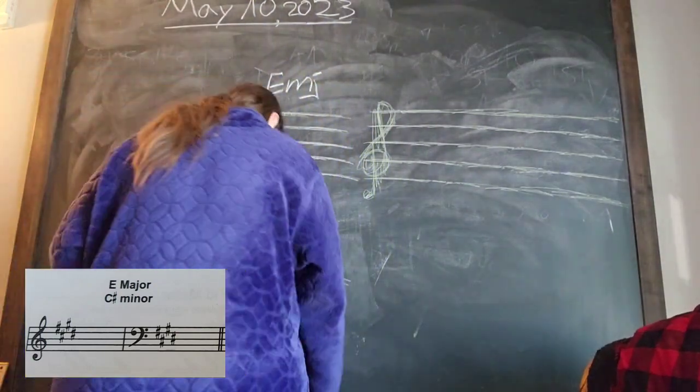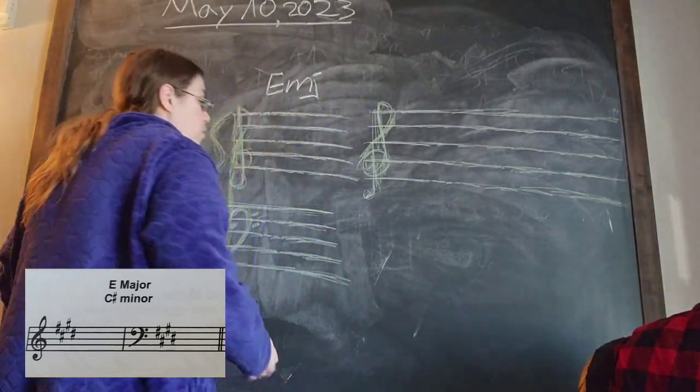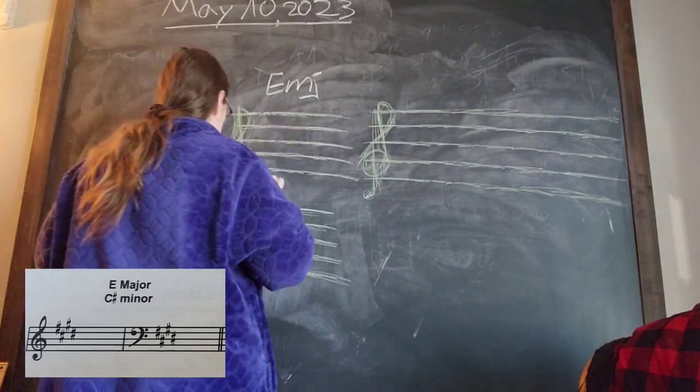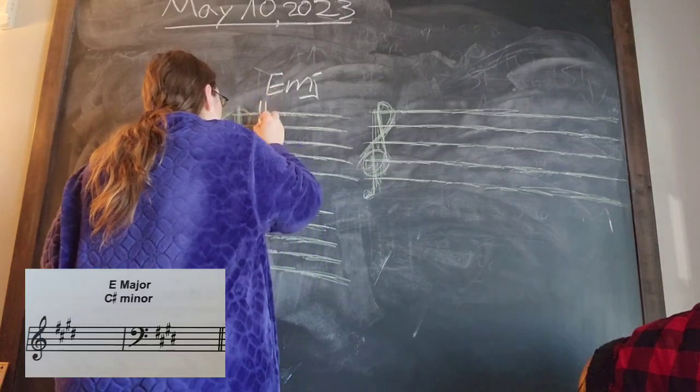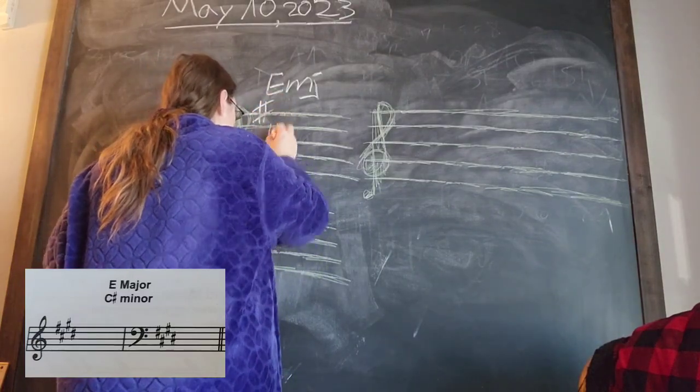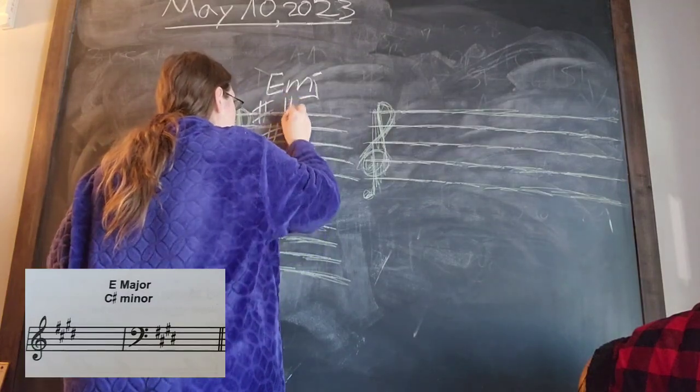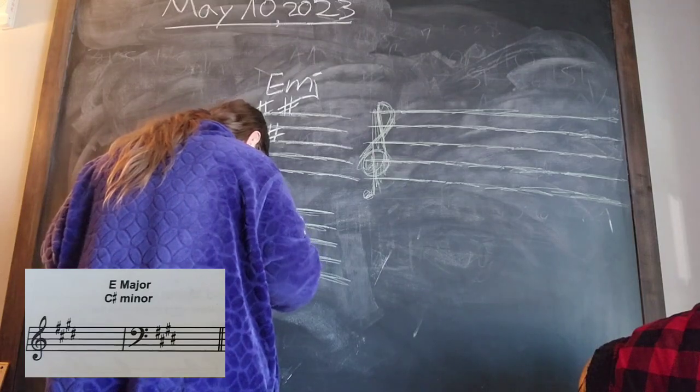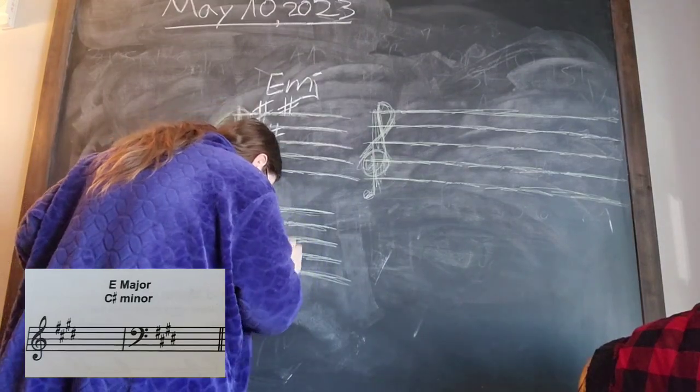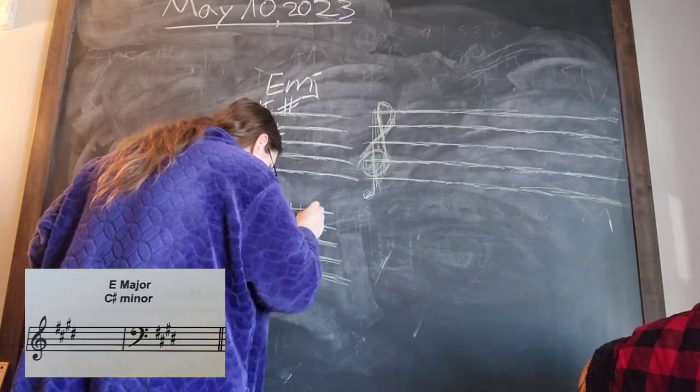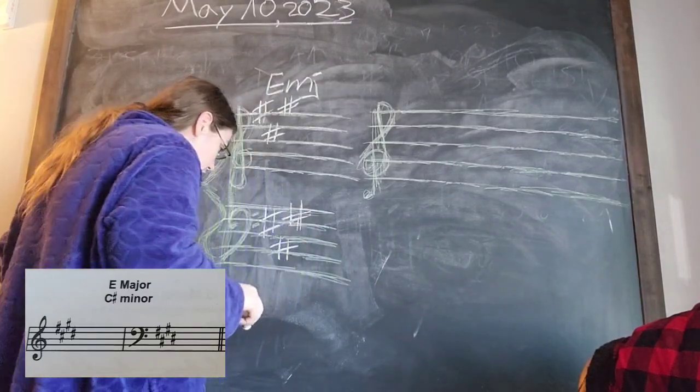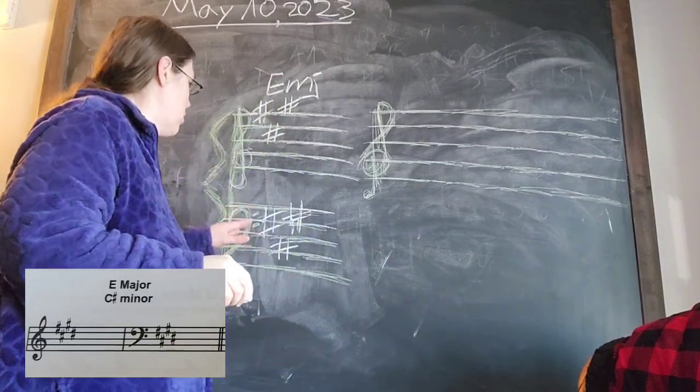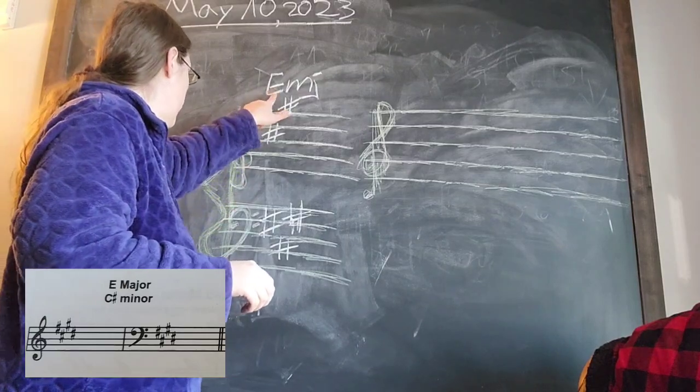As with all the other keys, we need to retain all the previous accidentals. So we've run across F sharp, C sharp, and G sharp in the treble and in the bass that looks like that, or something similar to it.